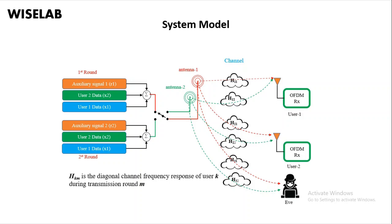When the first antenna is inactive, the second antenna is active. In the first round, we transmit an auxiliary signal plus user data 1 plus user data 2. In the second transmission round, antenna 1 is inactive and antenna 2 is active. We transmit auxiliary signal R2 plus user data 2 plus user data 1.